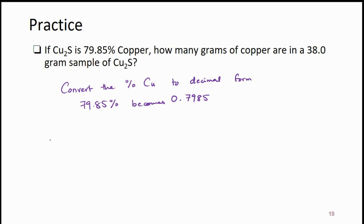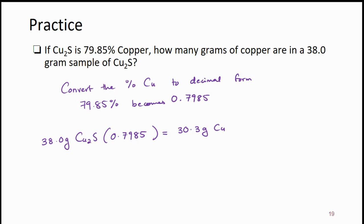The total mass is 38 grams — you have 38 grams of copper one sulfide. In order to find the amount of copper in grams, you multiply the total mass by the decimal 0.7985. That gives us 30.3 grams of copper. So that's how you figure out the mass of a component in the total mass of the compound if you are given the percentage: take the percentage, divide by 100 to make it a decimal, then multiply by the total mass to get the mass of copper. It's basically what you did in the previous problem, just in reverse.